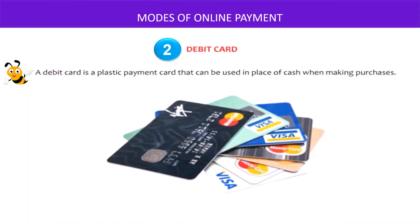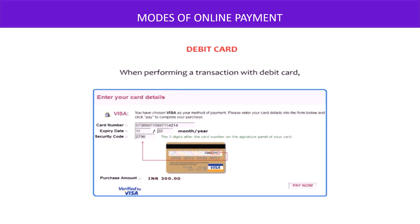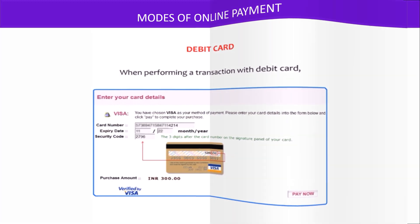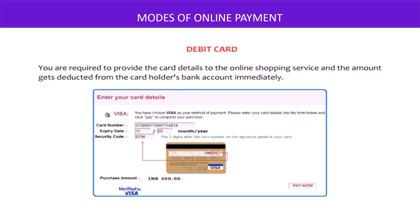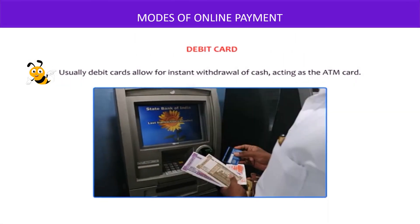Next is debit card. A debit card is a plastic payment card that can be used in place of cash when making purchases. When performing a transaction with a debit card, you are required to provide the card details to the online shopping service, and the amount gets deducted from the cardholder's bank account immediately. Usually, debit cards allow for instant withdrawal of cash, acting as the ATM card.